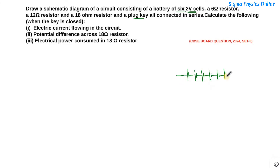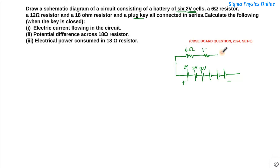This is the positive terminal and this is the negative terminal. Each of these is having a value of 2 volts. Now there are 3 resistors: one is a 6-ohm resistor, another is a 12-ohm resistor, and the third one is an 18-ohm resistor, and they are all connected in series. Here we have drawn the 3 resistors in series, and then there is a plug key. When it is closed, current starts flowing in the circuit.